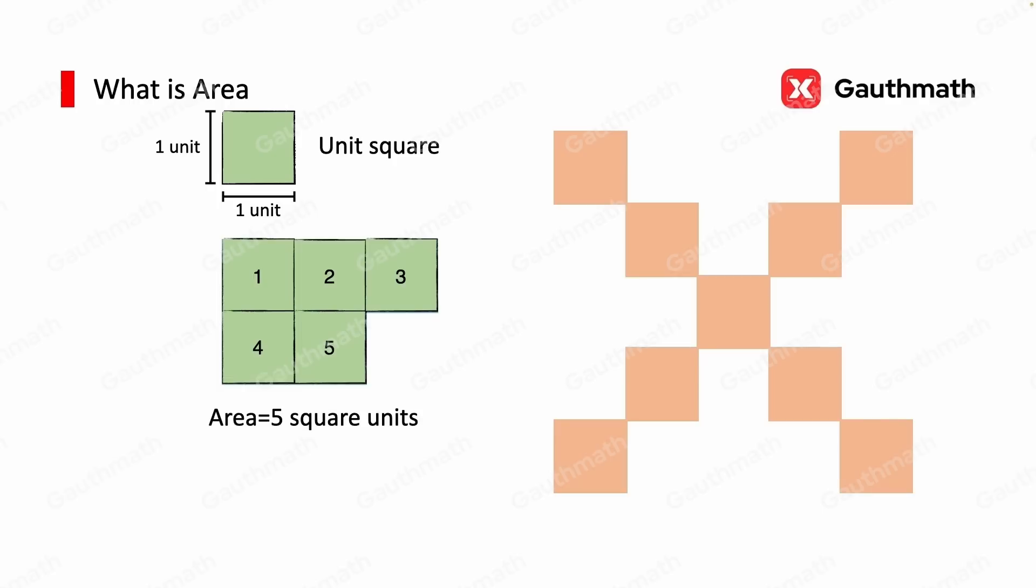Now let's see how many unit squares the right x-shaped figure has. 1, 2, 3, 4, 5, 6, 7, 8, and 9. The square unit enables comparison. We can tell the area of the right figure is 4 square units larger than the left one.